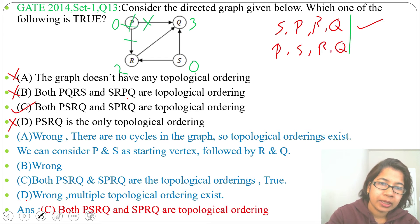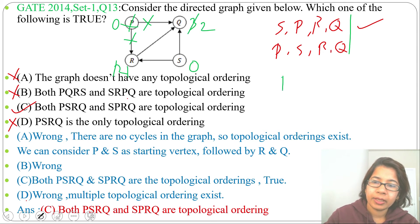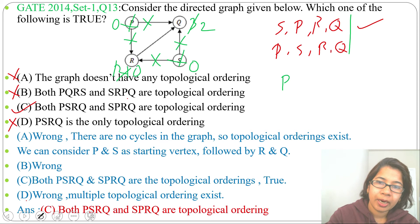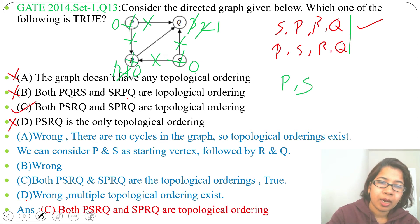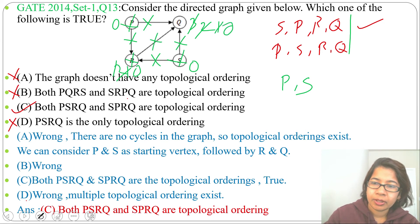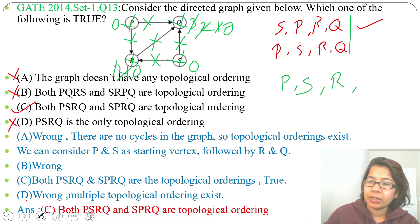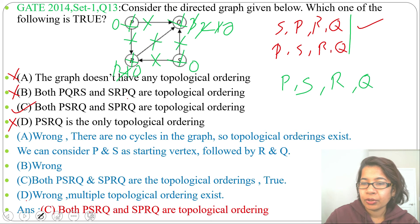Starting source removal from P: remove P with its outgoing edges — in-degree of R becomes 1, in-degree of Q becomes 2. Insert P in the queue. Next remove S — in-degree of R becomes 0, in-degree of Q becomes 1. Insert S. Remove R — in-degree of Q becomes 0. Insert R. Remove Q. We get the sequence P, S, R, Q.